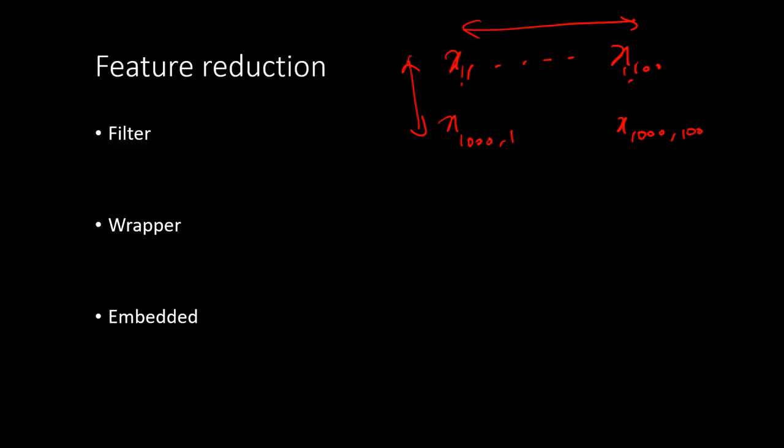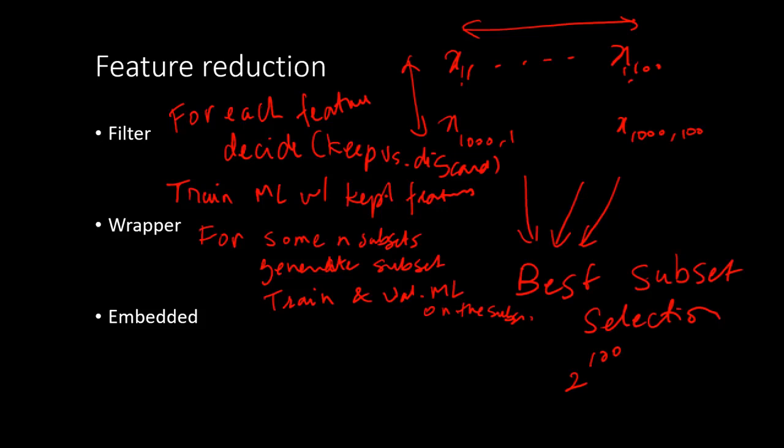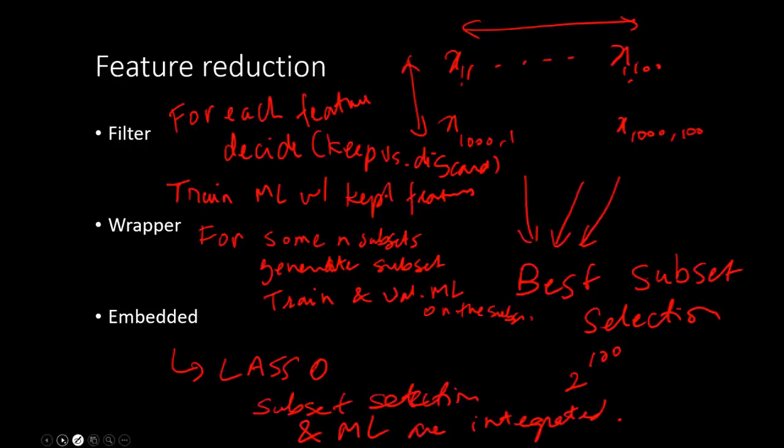Embedded methods are those where the model training and feature selection is happening tightly together as a part of a single process. An example would be LASSO, L1 regularization for linear regression or logistic regression. This is where subset selection and ML are integrated. These are roughly three different ways of looking at features. Let us look at each of these in a bit more detail.